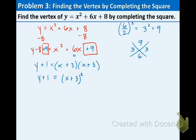Now we want to get the y by itself, so subtract the 1 to the other side, y equals x plus 3 squared minus 1. Now you can see this is in vertex form, the hk form that I referenced in the previous slide. So now to figure out what is the actual vertex coordinate.